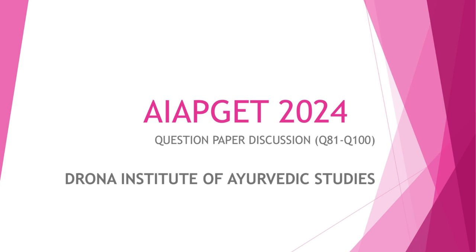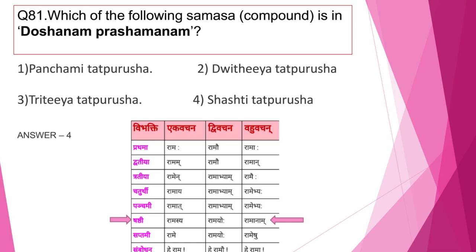Namaste everyone, myself Dr. Sharanya A. In this video, let's continue our question paper discussion from question number 81 to 100. Question number 81: Which of the following samasa is present in 'dosha naam prashamanam'? Panjami, Dvidhiyya, Trithiya, Shashti. The correct answer is option 4, Shashti Tathpurusha. The shabda-roop of dosha is similar to that of Rama, so dosha naam comes in Shashti Vibhakti. The correct answer is Shashti Tathpurusha.